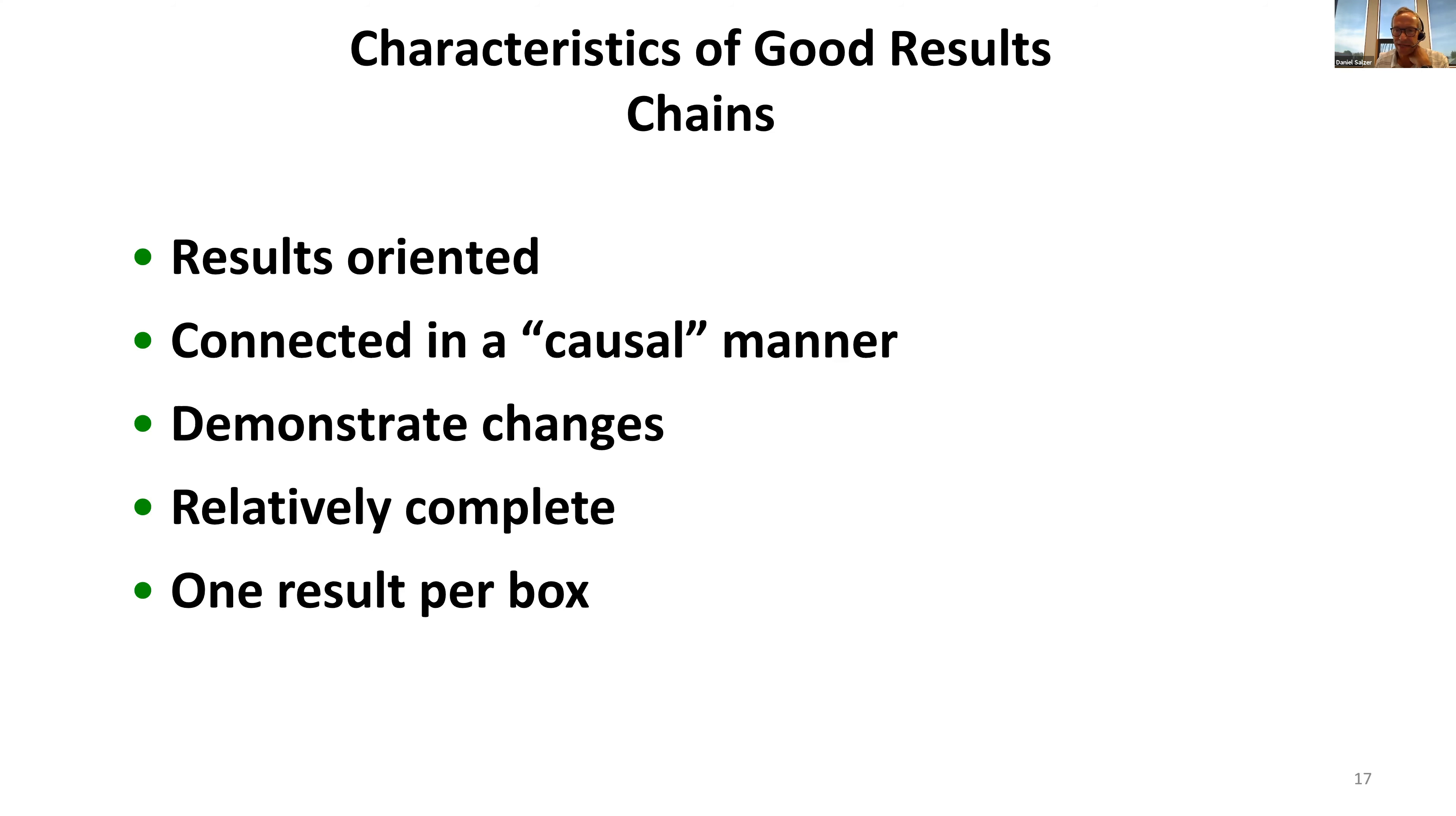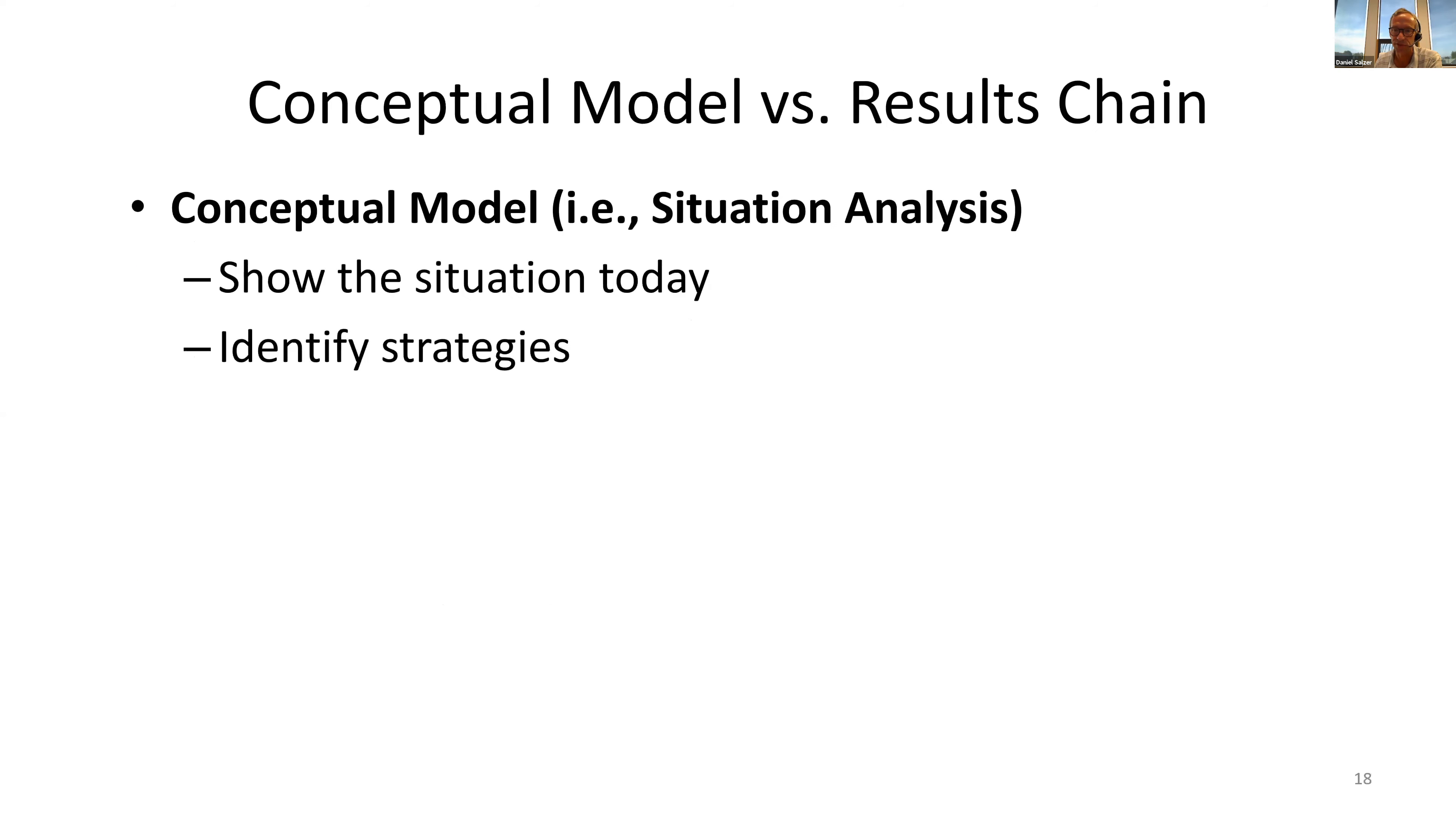Here's some characteristics of good results chains. The boxes contain desired results and not activities. They're connected in a causal manner—clear if-then connections between each pair of boxes. They demonstrate change. Each box should describe how you hope the relevant factor will change. They should be relatively complete but not overly complex, with one result per box.